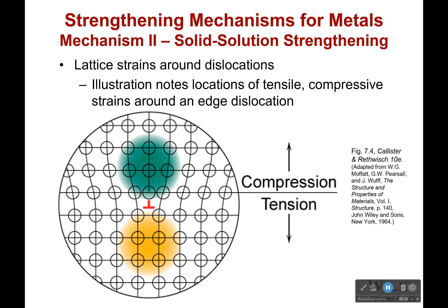Because we have dislocations, they cause a lot of strains. Over here, the atoms are compressed together — too much. Over here, there's too little; there's a tensile stress. Our dislocation is causing that the entire time. So there's something that can block that compressive stress and fill that tensile stress, which will cause that dislocation to have more difficulty moving.